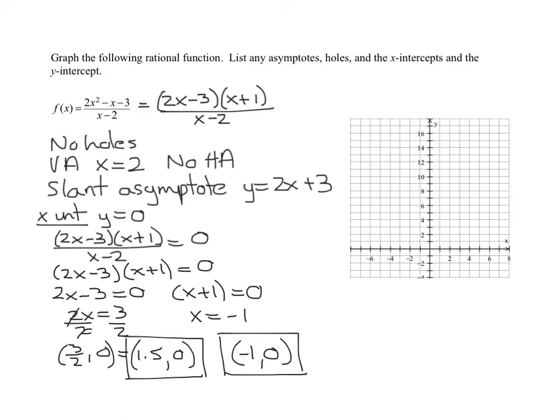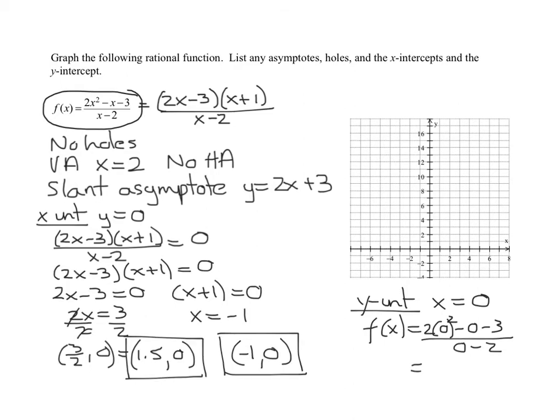The last thing I need to find is the y intercept. We do that by setting x equal to 0. I think I'm going to use this version of f of x. It'll be a little bit easier. So f of x equals 2 times 0 squared minus 0 minus 3 over 0 minus 2. These two terms go to 0. So I'm going to get negative 3 over negative 2, which is 3 halves. So that is the point 0, 1.5. I've found all of my intercepts now.